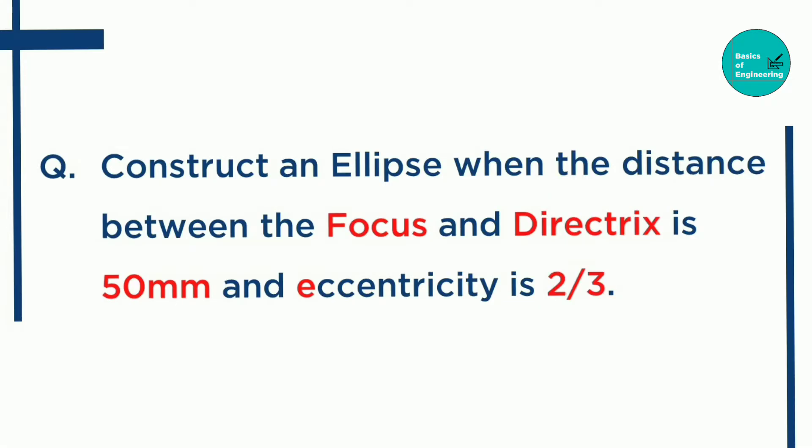Construct an ellipse where the distance of focus from directrix is 50mm and eccentricity is equal to 2 by 3. The data given is: first, the distance of focus from directrix is 50mm, and second, eccentricity is equal to 2 by 3.